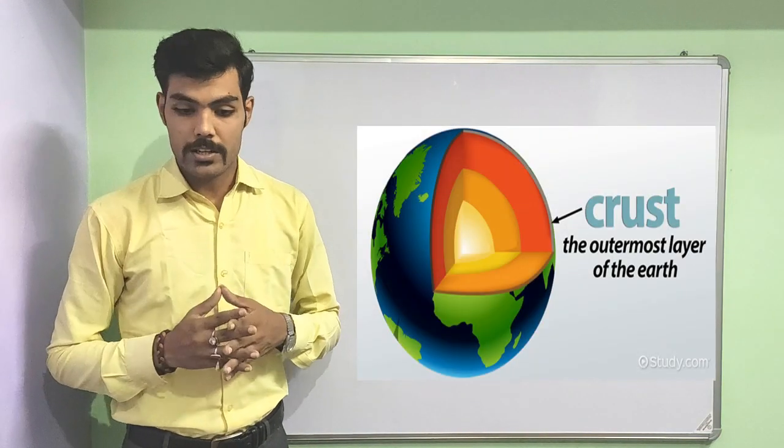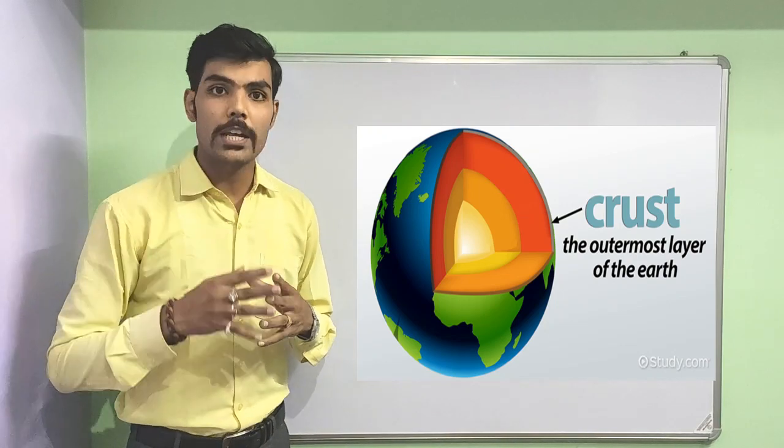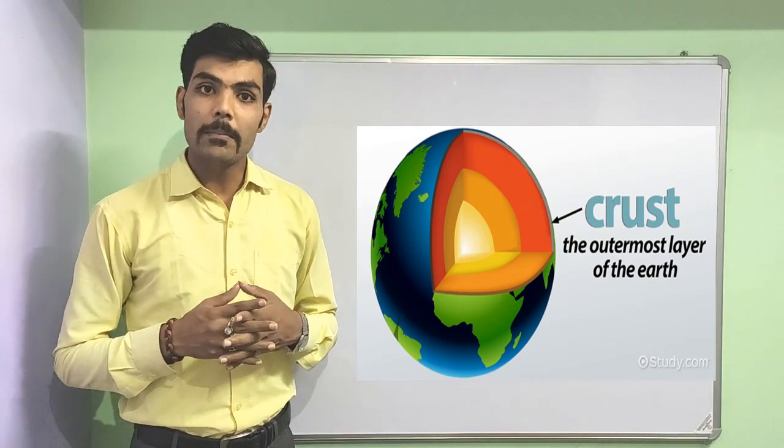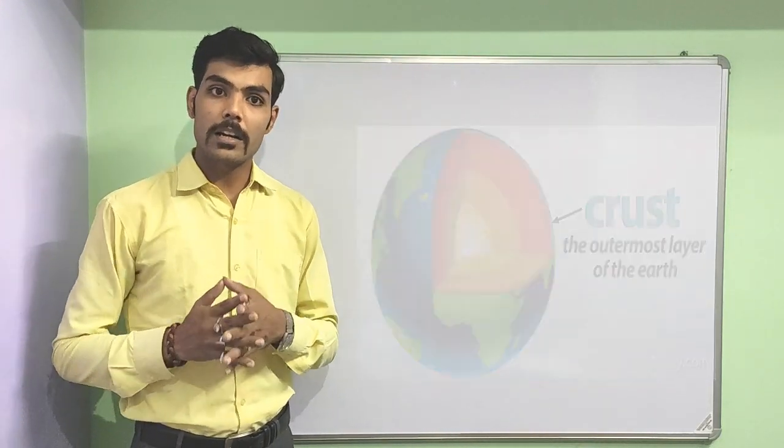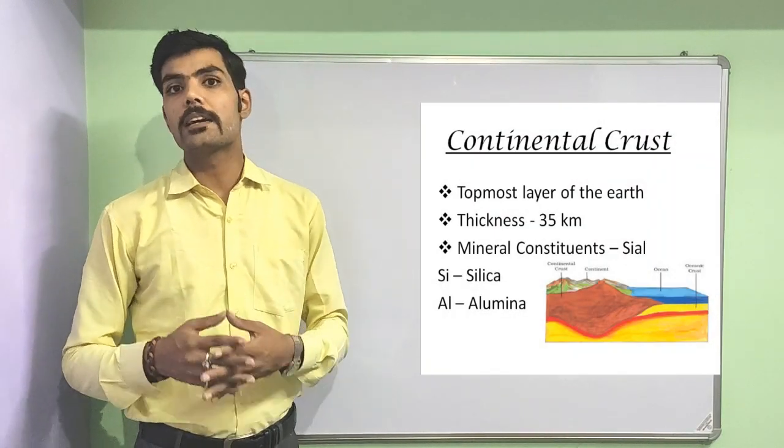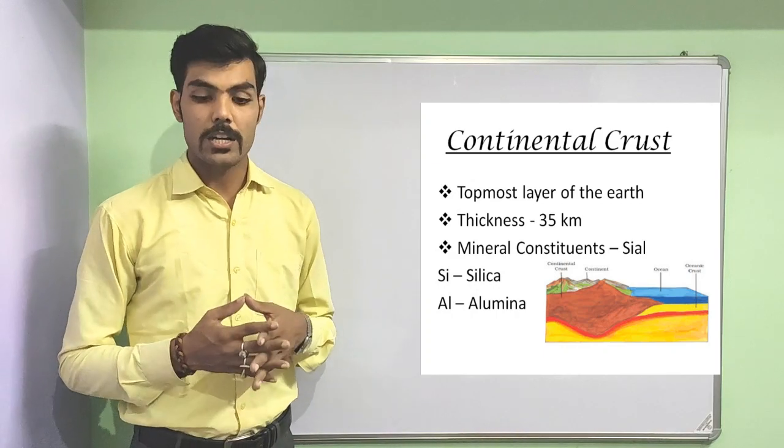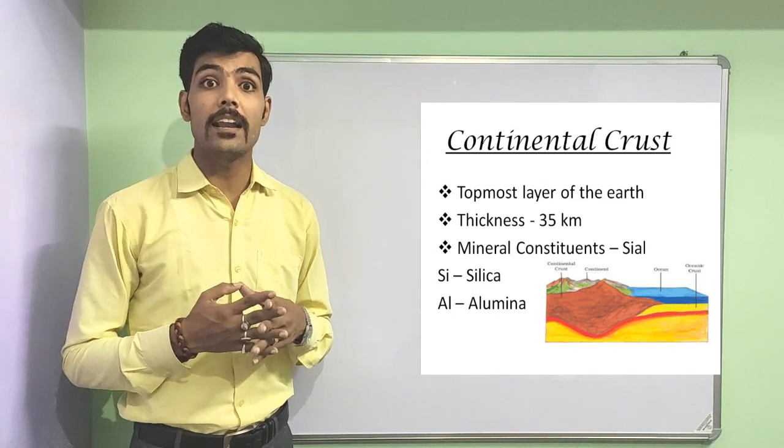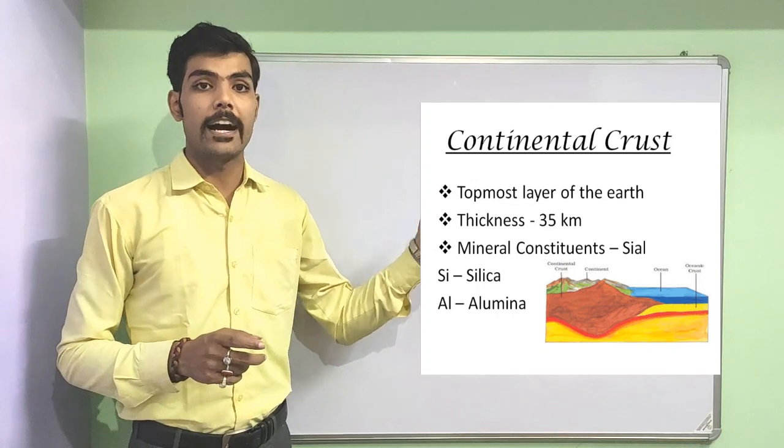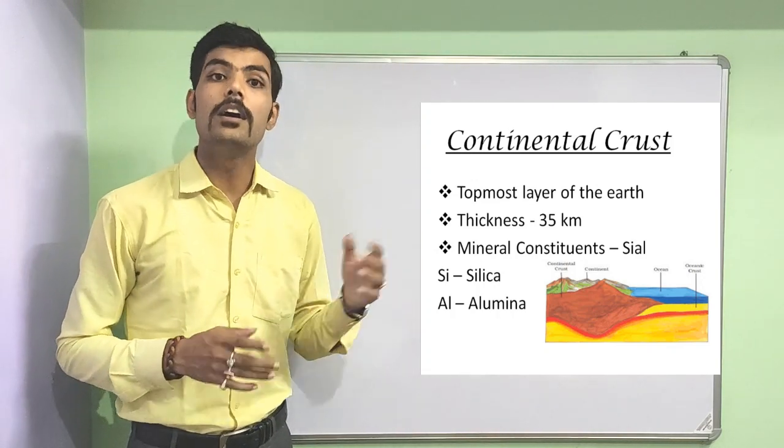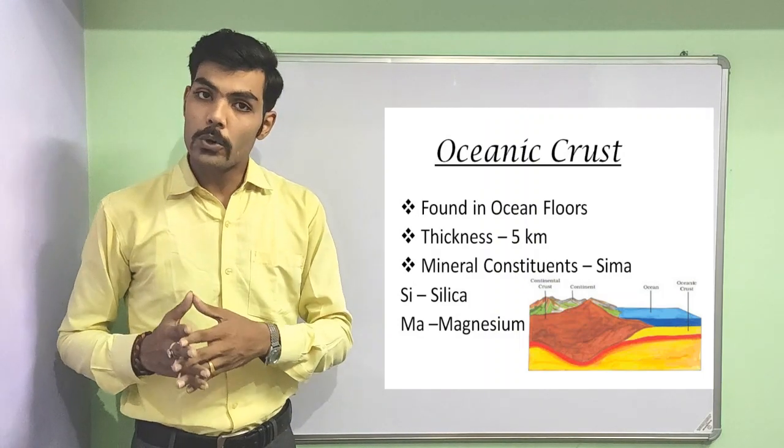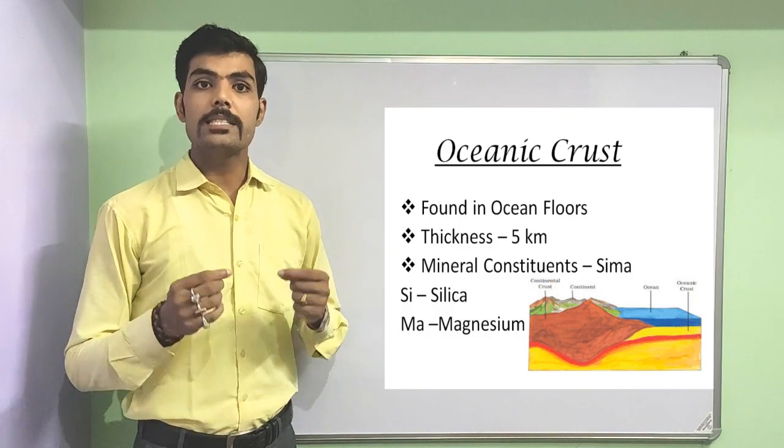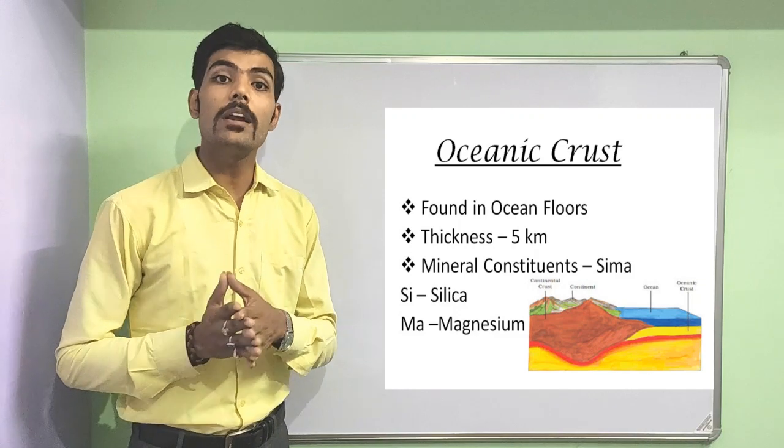Now let's discuss about crust. Crust is the thinnest and the uppermost layer of the earth. Crust is further divided into two things: one is continental mass, second oceanic floor. So the crust on the continental mass is known as continental crust, whereas the crust on the oceanic floor is known as oceanic crust. The continental crust is 35 km deep inside the earth and it consists of SIAL. SIAL is the short form of silica and alumina - SI stands for silica and AL stands for alumina. Whereas when we talk about the oceanic floor, it is 5 km deep inside the earth and it consists of SIMA where SI stands for silica and MA stands for magnesium.